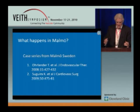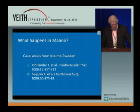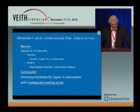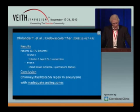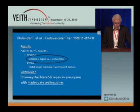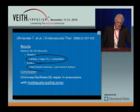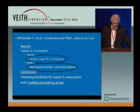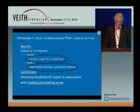Let's have a look at what happens in Malmo. There are not a lot of data on chimneys, but there are a couple of publications out of Malmo — one in 2008, another in 2009. The 2008 paper had 10 patients: four with T-VAR and six with EVAR and chimneys. Results for T-VAR patients: one stroke, one type one endoleak, one conversion. Of the six EVAR patients: one fatal bowel ischemia, one permanent dialysis. The Malmo team concluded chimneys facilitate stent graft repair in aneurysms with inadequate sealing zones. I don't think so.